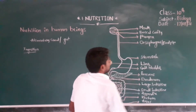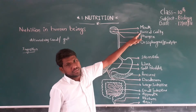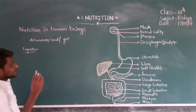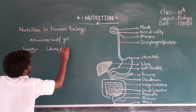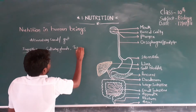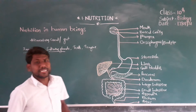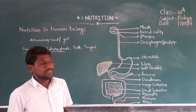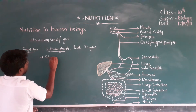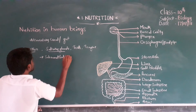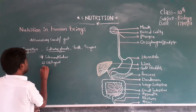Next, the buccal cavity. The space or cavity in the mouth is called the buccal cavity. This buccal cavity contains mainly three parts. The first one is salivary glands, the second one is teeth, and the third one is the tongue. In the buccal cavity, three types of salivary glands are there.